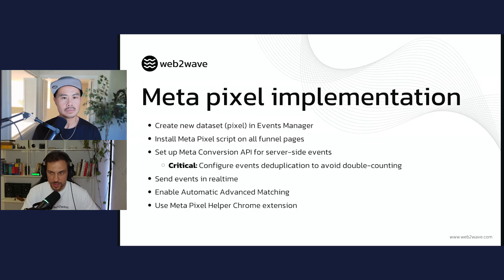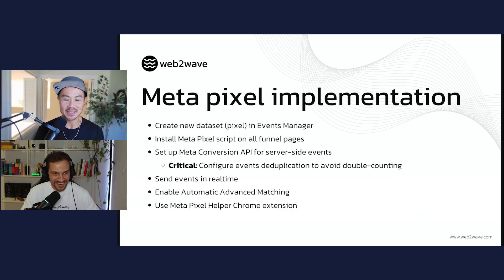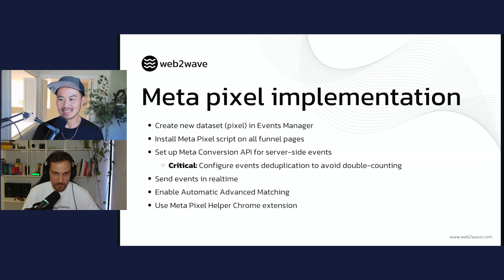A useful tool for testing events is the Meta Pixel Helper Chrome extension — it shows a log of all events with all their properties, helping confirm what's being sent. There are also similar extensions for TikTok, Snapchat, and other platforms. For deduplication, you pass the same parameters from browser and server — typically event ID, FBP, and FBC. FBC is the Facebook Click ID: a unique identifier added to your link URL by Facebook when a user clicks an ad, which attributes that user to a specific Meta campaign.